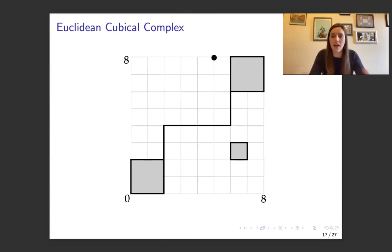And then when we attach these elementary cubes nicely we're going to get a Euclidean cubical complex, such as here, and specifically we're going to always have our cubes on integer coordinates.